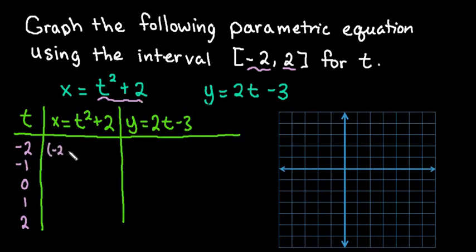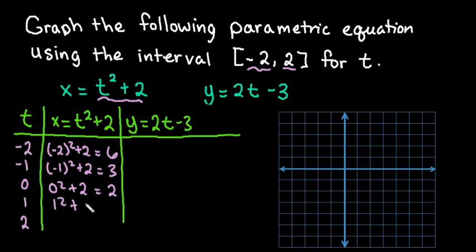So I would do negative 2 squared which is 4 plus 2 gives me 6. Negative 1 squared plus 2 gives me 3. 0 squared plus 2 gives me 2. 1 squared plus 2 gives me 3. And 2 squared plus 2 gives me 6.